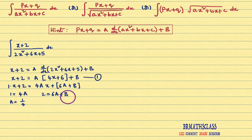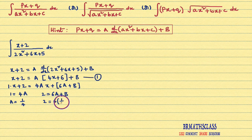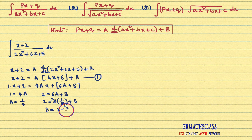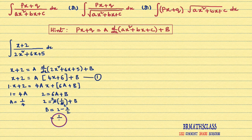Now I'll substitute this a value into the equation to get b. Comparing the constants: the constant on the left is 2 and on the right is 6a+b. Substituting a = 1/4: 2 = 6·(1/4) + b = 3/2 + b. So b = 2 − 3/2 = 1/2. Finally, we got a = 1/4 and b = 1/2.